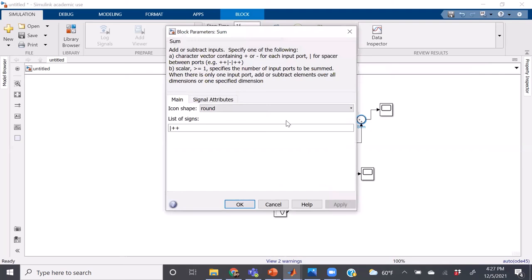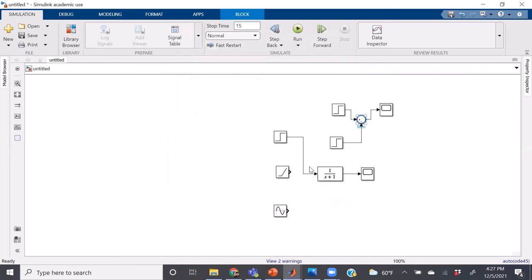But we're going to want to subtract the second one from the first one. So let's just double click and change one of the signs to minus. And as you can see, that made the second one subtract from the first one.